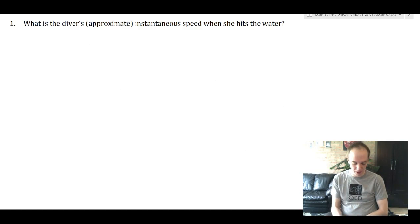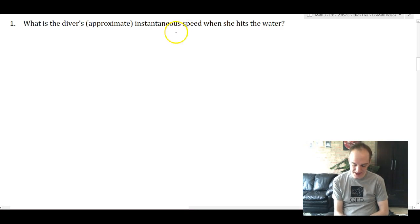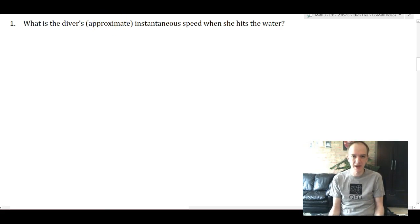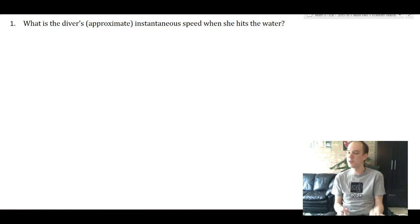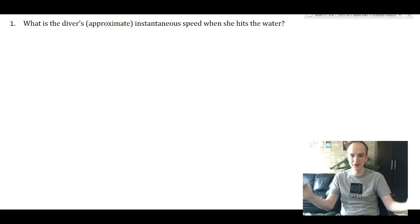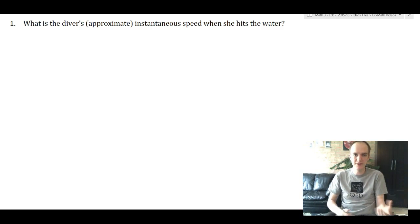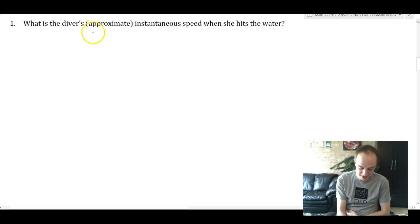Now we get the really fun one. We need to find her approximate instantaneous speed when she hits the water. We keep using the word approximate because we are doing an estimate here. This is not an exact calculation. Depending on the number of decimal places you use, the number of 9's you use, you can get different qualities of approximation. We've decided on the quality of approximation for our purposes, but it is an approximation.